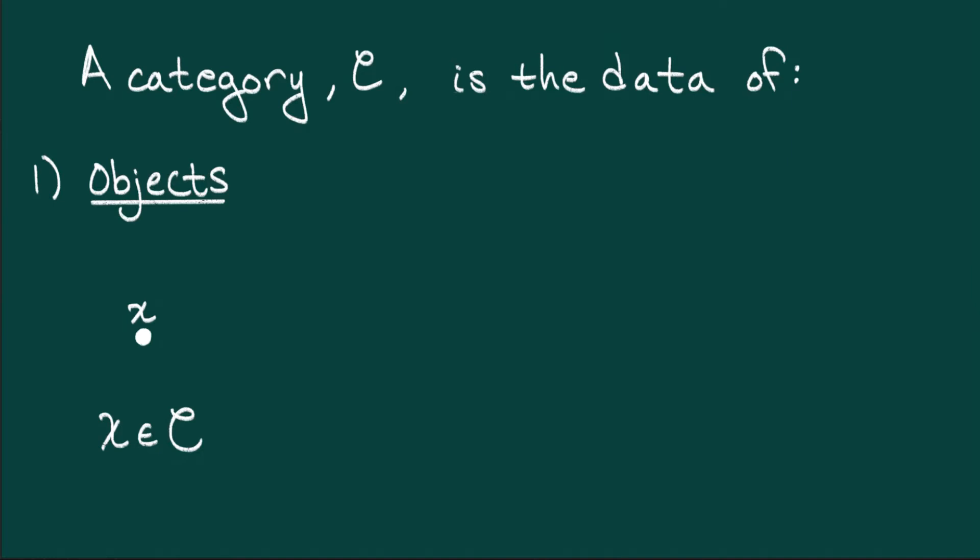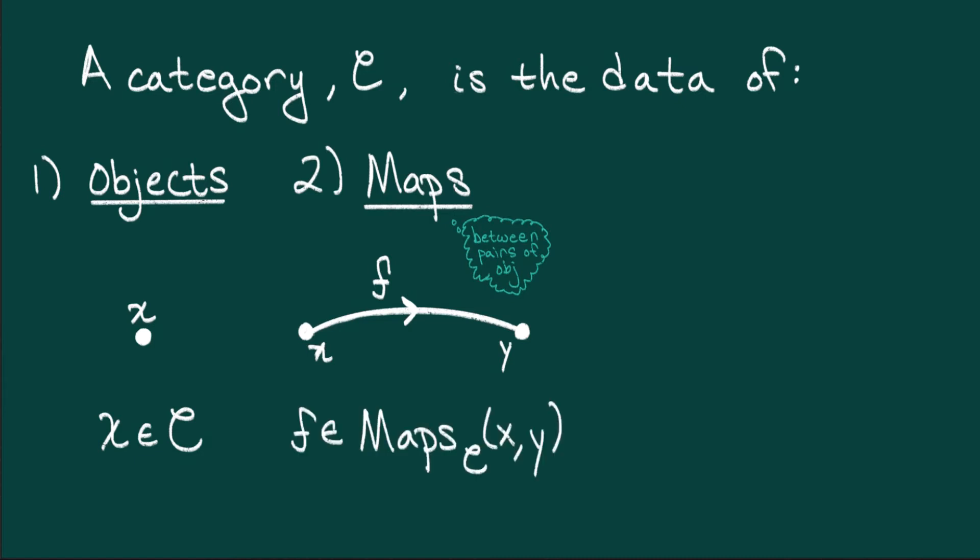The second piece of data is a collection of maps between pairs of objects. We'll represent these as arrows starting at one object called the source and ending at another object called the target. Someone in network theory might call these directed edges. A geometrically-minded person would say a one-way path. And a category theorist would probably say morphism. I'll use the word map. Between any pair of objects, there is a set of maps, and I'll adopt the following notation. Shorthand for f is a map in c from x to y.